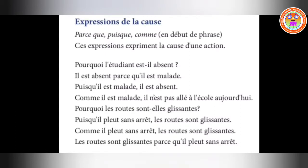The last one, comme, is used at the beginning of a sentence, same as puisque. It highlights the link between the consequence and its result — here it is a logical cause known by all. So comme and puisque both refer to known facts, whereas parce que is only used when the fact is unknown.